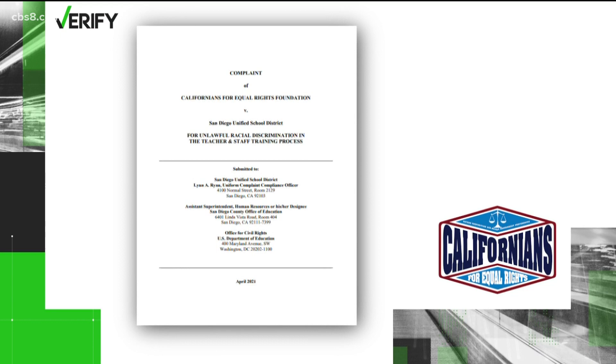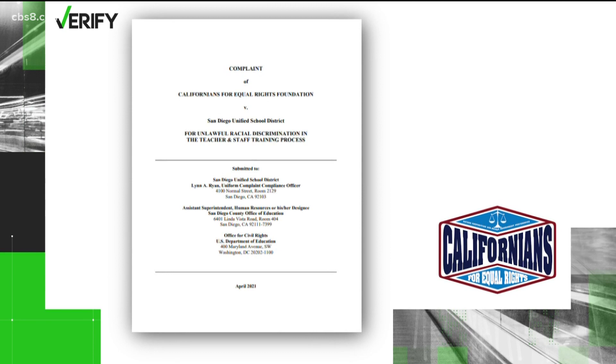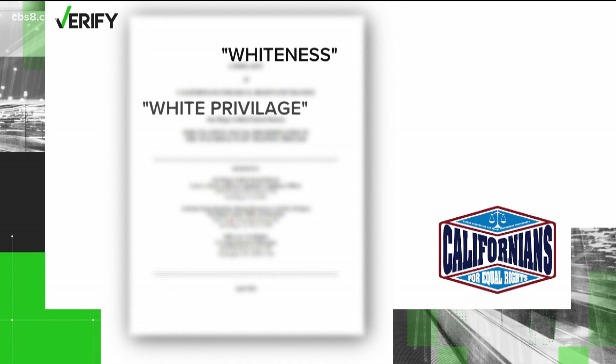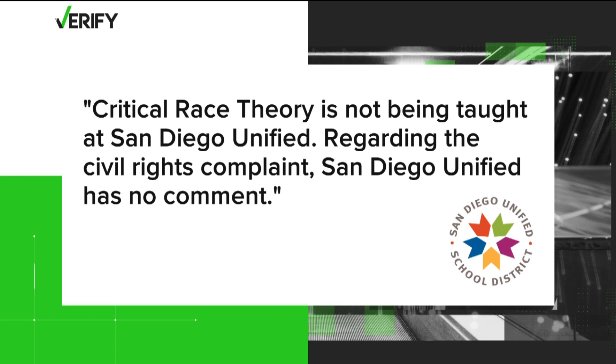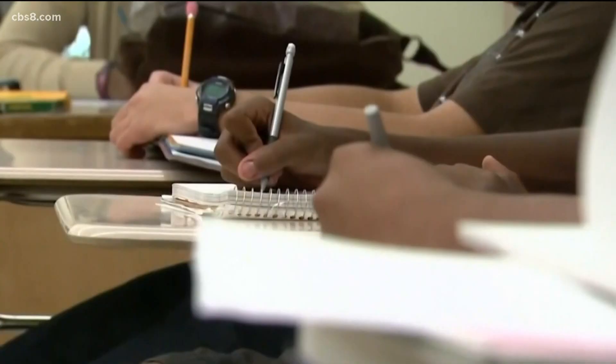One consequence, he says, is that students who don't agree with this ideology will be afraid to speak up, because based on this ideology, if they don't agree, they'll be labeled racist. Californians for Equal Rights Foundation is among six organizations that recently teamed up to file a civil rights complaint against San Diego Unified, claiming they're providing teachers with critical race theory training that's discriminatory and uses terms like whiteness, white privilege, and anti-racism. In a statement, a district spokesperson tells News 8 that critical race theory is not being taught at San Diego Unified. Regarding the civil rights complaint, San Diego Unified has no comment.